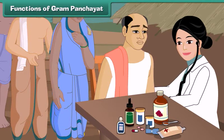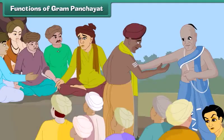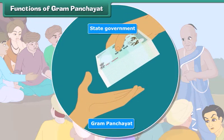The gram panchayat provides facilities for maintaining public health and hygiene and organizes health programs for its people. It also maintains law and order in the village. For performing all these functions, the gram panchayat receives funds from the state government.